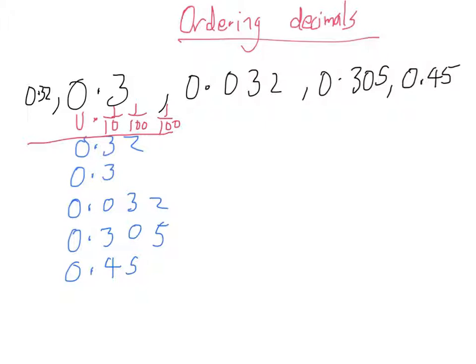On this 0.32, to keep it the same I could just add a zero in this last column. It's still the same, but it's now got three numbers after the decimal point.